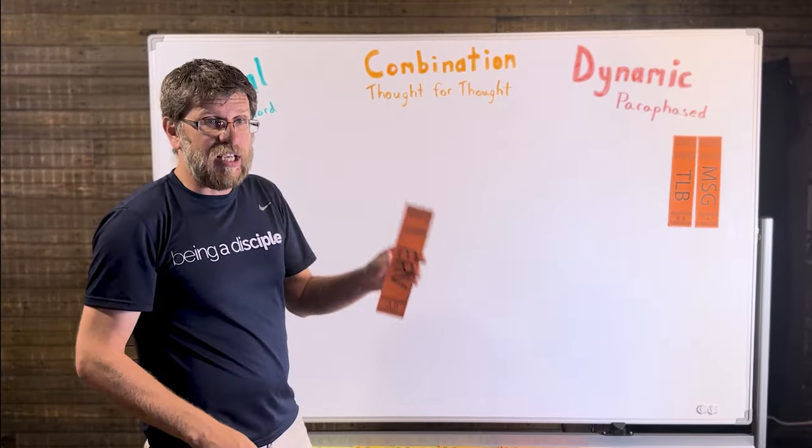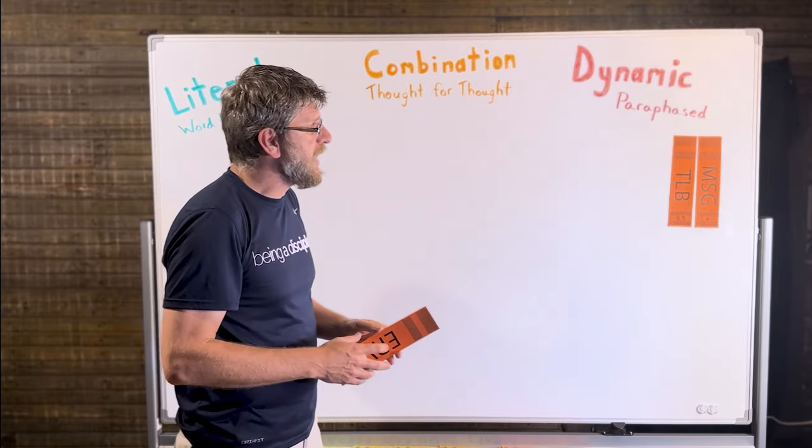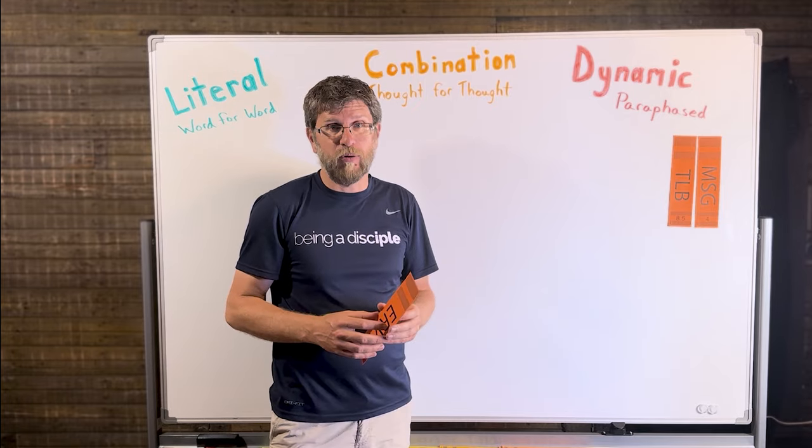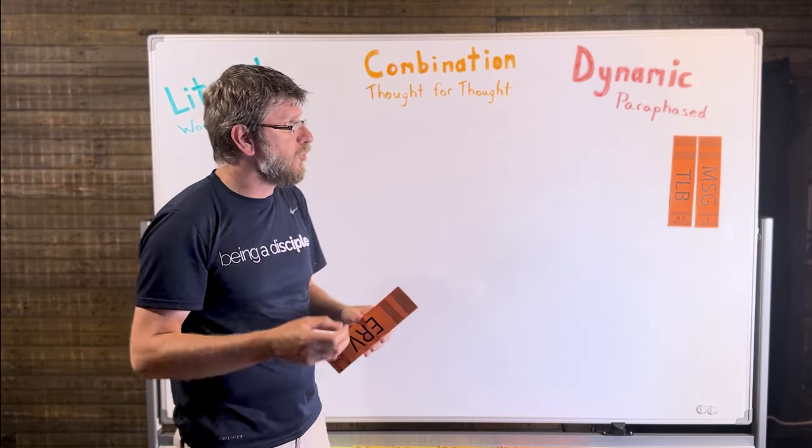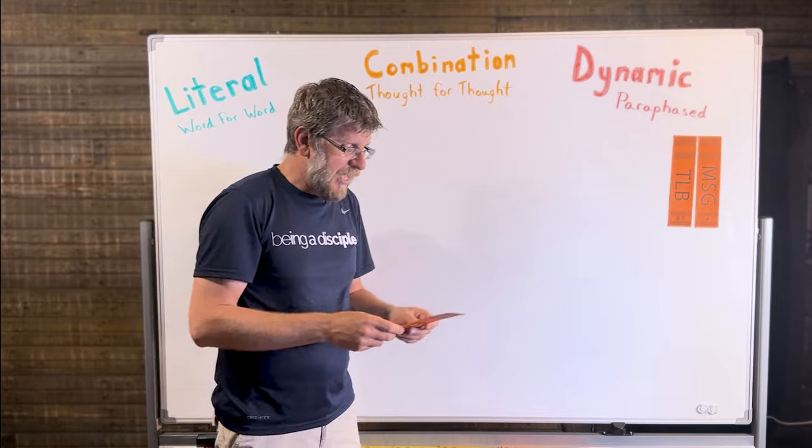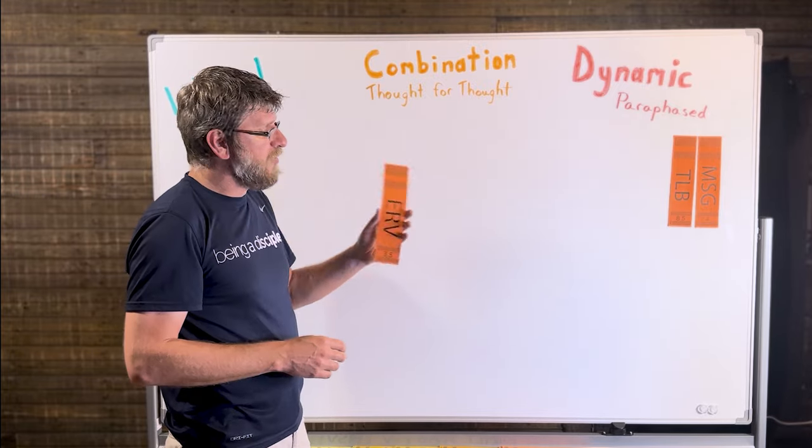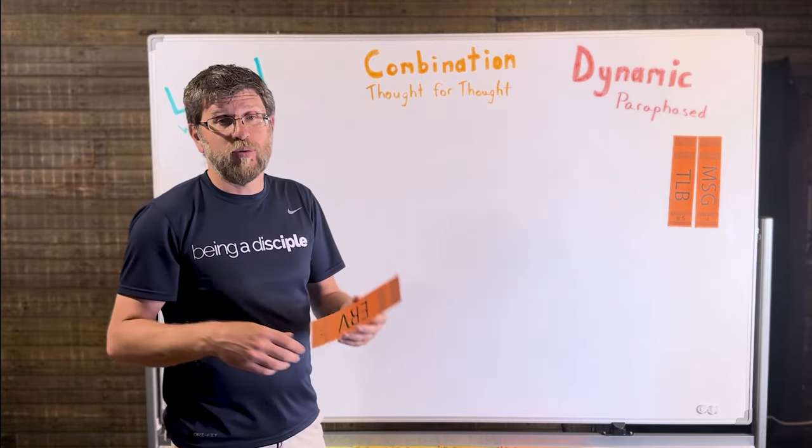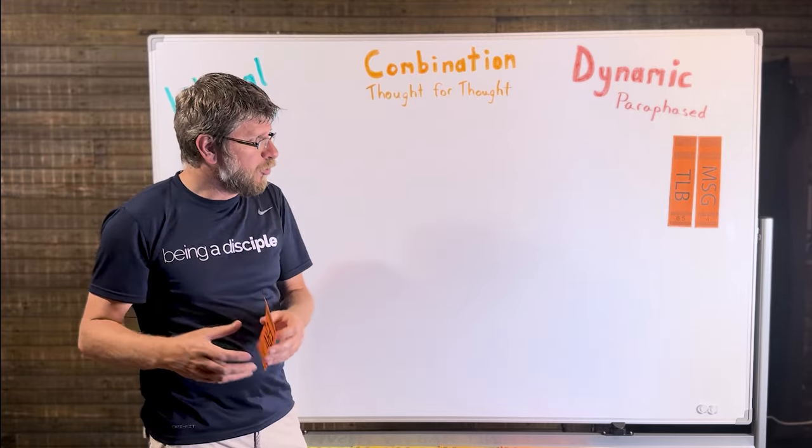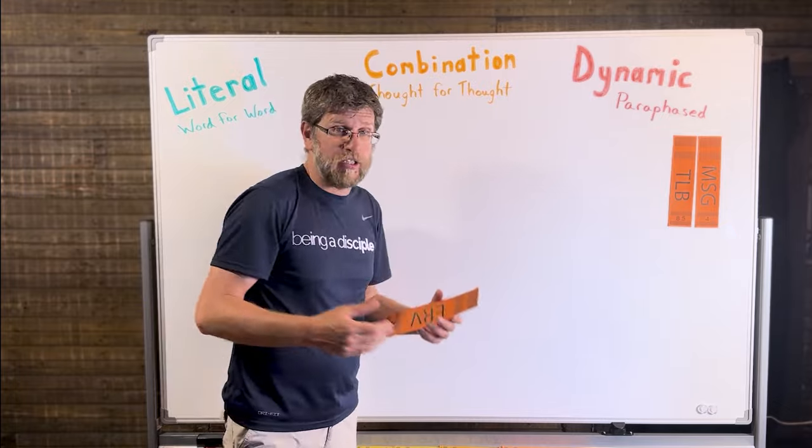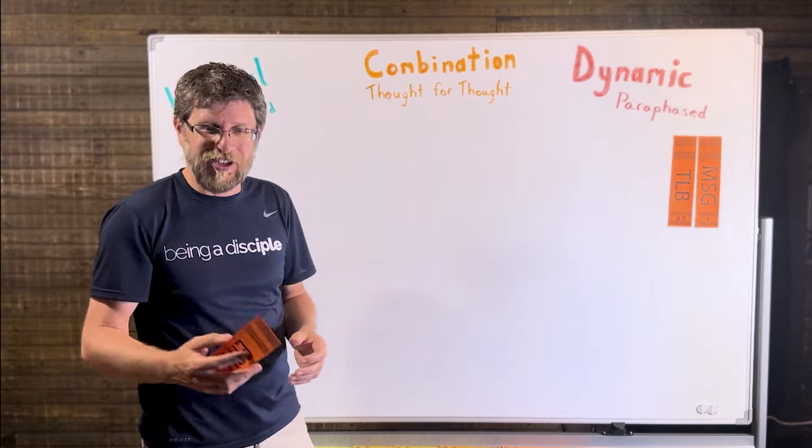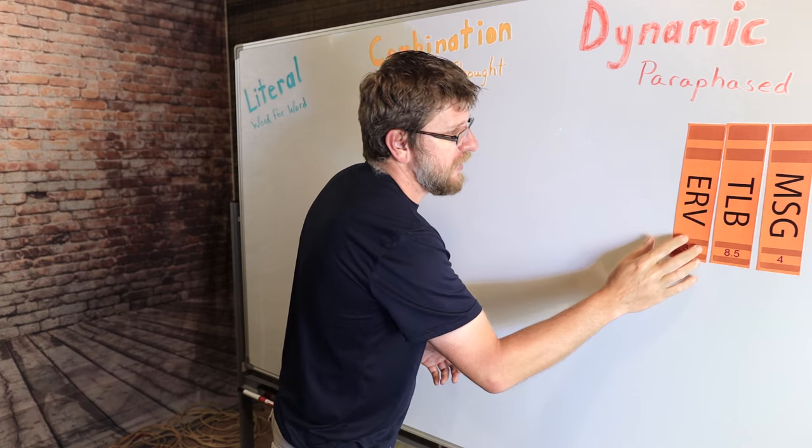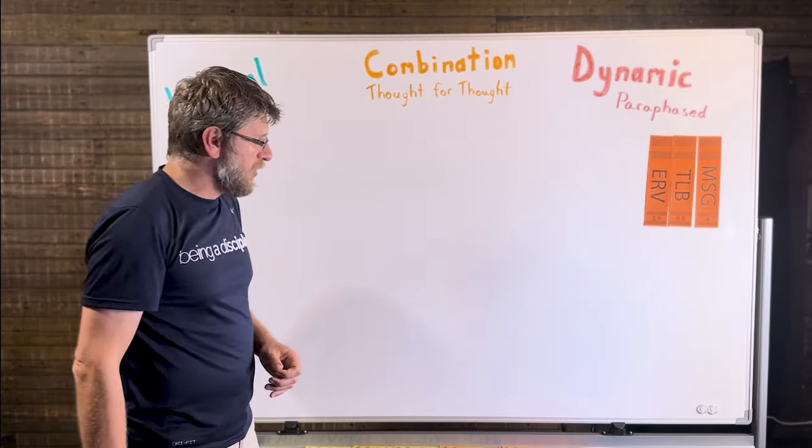Another one is the Easy-to-Read Version. In the late 80s, they created a version that was specifically for deaf people and people that had really struggled with the English language. And this was also one of the main ones that is used in things like prison ministries or outreach to low-literacy groups that are struggling to understand English. This is a great Bible for those that have little to no background in reading the Bible.